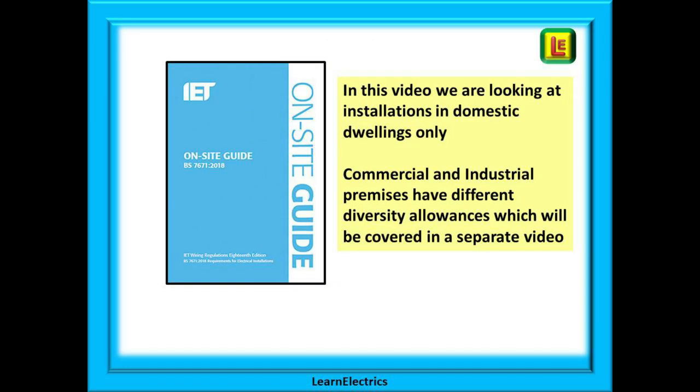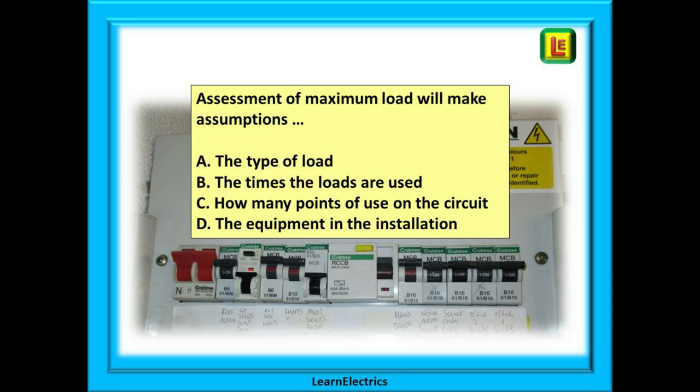In this video, we're looking at installations in domestic dwellings only. Commercial and industrial premises have different diversity allowances, which will be covered in a separate video. Any assessment of maximum load will make certain assumptions, such as the type of load, the times the loads are used, how many points of use are on the circuit, the equipment in the installation, and so on.